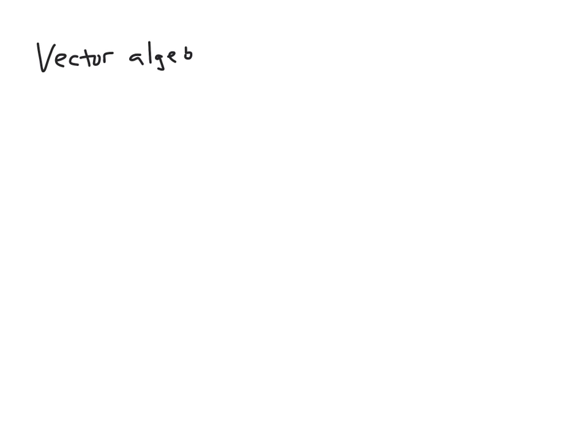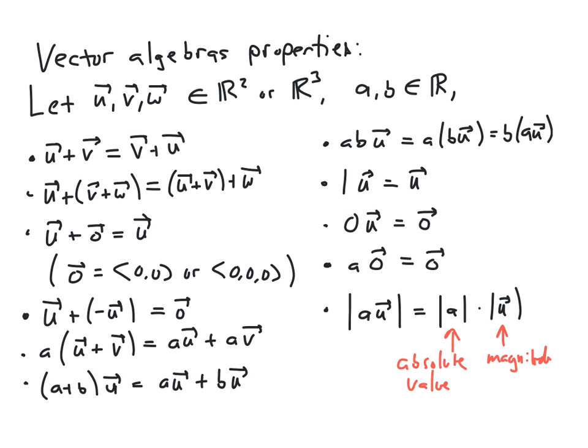Now that we have vector addition and scalar multiplication, the next step is to look at some basic properties that these operations satisfy. Here is a list of properties, most of which should be obvious, but we want to be complete. Here u, v, and w are all vectors — either in R2 or R3, as long as they're in the same space — and a and b are scalars. You should see a lot of familiar properties from arithmetic.